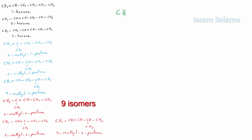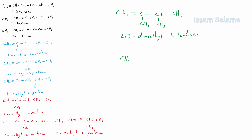Let's draw four carbon atom alkenes with a double bond at the first carbon. We cannot add substituents at the end carbons, so we have two possibilities: one methyl at the second carbon and one methyl at the third carbon — called 2,3-dimethyl-1-butene. Let's try drawing two methyls on the same carbon, the third carbon.